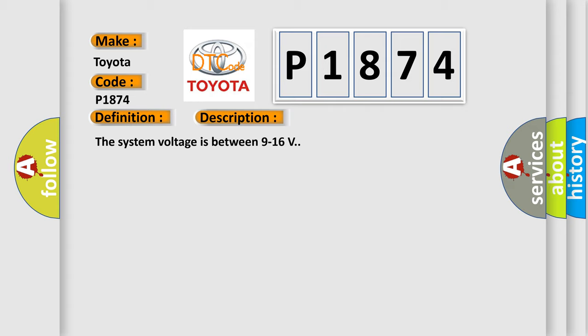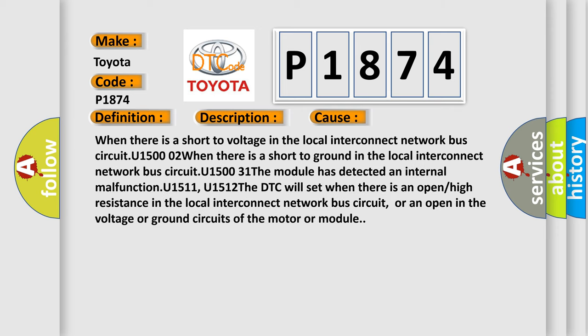This diagnostic error occurs most often in these cases: When there is a short to voltage in the local interconnect network bus circuit U1500 2, when there is a short to ground in the local interconnect network bus circuit U1531, the module has detected an internal malfunction U1511, U1512. The DTC will set when there is an open or high resistance in the local interconnect network bus circuit, or an open in the voltage or ground circuits of the motor or module.